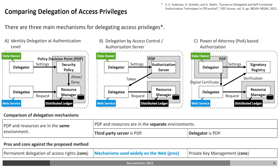Based on the above comparison, considering the delegation of access privileges in the proposed method, Type A is not suitable because it basically delegates access privileges permanently. Type C requires the delegator to manage a private key in order to issue a digital certificate and is difficult to use in the same way as general web services. In contrast, Type B can use OAuth and OpenID Connect, which are popular authorization mechanisms on the web and is suitable for the situation in this research. Therefore, this study employs Type B and in particular OpenID Connect.